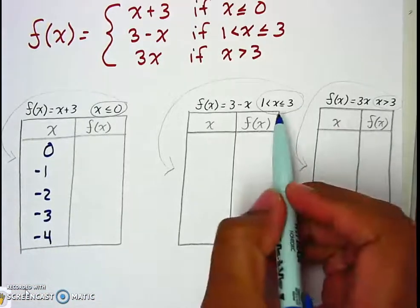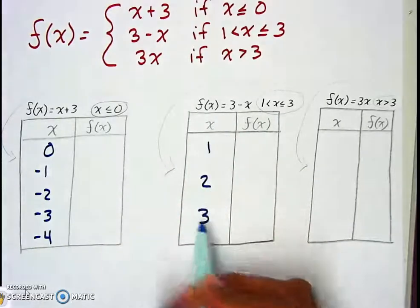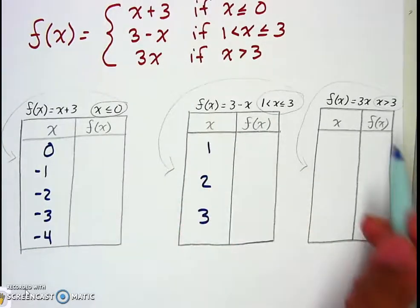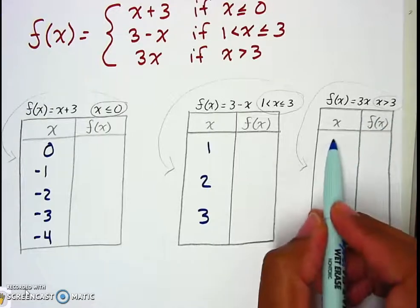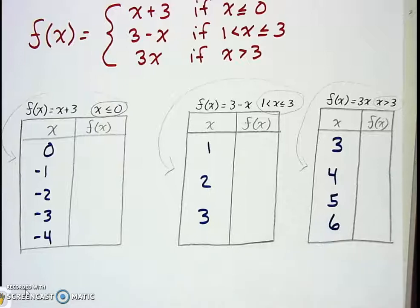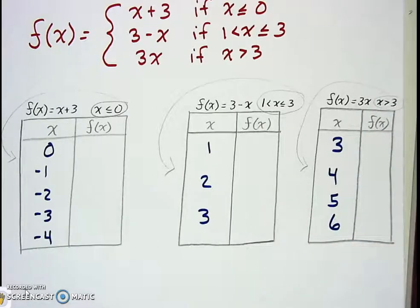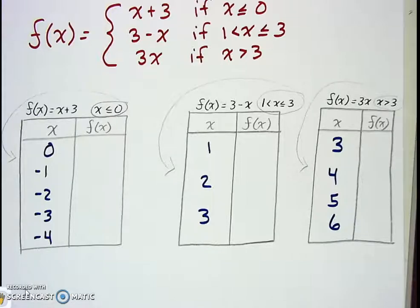For the second interval, it's between one and three, so we use one, two, and three — always include the endpoints. For the third piece starting at three, we go three, four, five, six — again four or five numbers — since it continues to positive infinity, we need at least four or five values there.